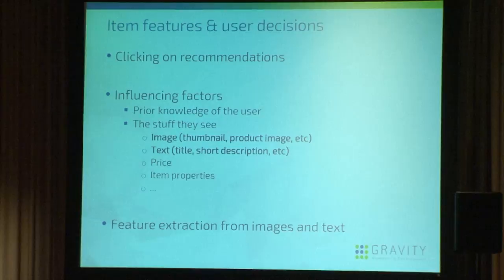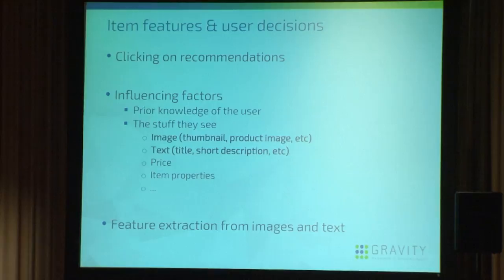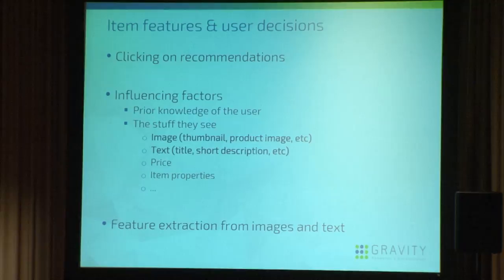Now the other part: the item features. If you think about what information the user bases his click decision on — he has some prior knowledge and internal state, like how tired he is — we can't really know anything about that. But the other influencing factor is what they see on screen, which is usually an image, a product image, a thumbnail, or a related image. There's also some textual data like a title, short description, or item properties. We want to include these rich features into the recommendation, and that's basically the work we are dealing with.